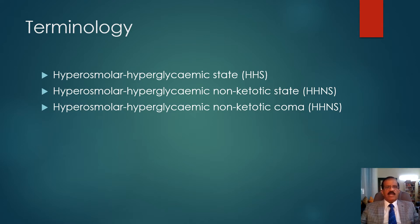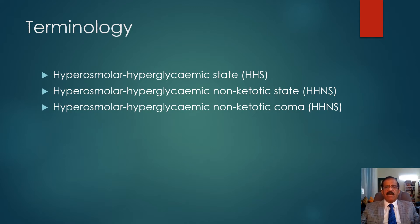Previously HHS used to be called hyperosmolar hyperglycemic non-ketotic state, to differentiate it from DKA where there is ketosis. Currently we consider that adding 'non-ketotic' is unnecessary — just saying hyperosmolar hyperglycemic state is good enough. Before that it was called hyperosmolar hyperglycemic non-ketotic coma, but coma is very rare; most patients have some altered state of consciousness.